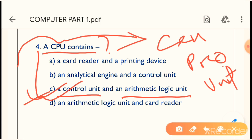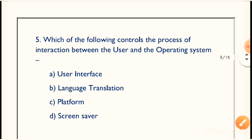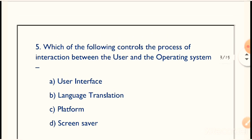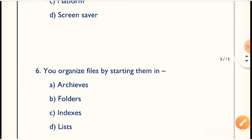CPU is the brain of the computer, just remember that. Next question: Which of the following controls the process of interaction between the user and the operating system? The question asks what handles interaction between users and the operating system. Option A — User Interface — is the right answer.